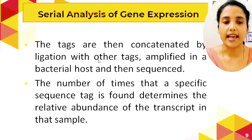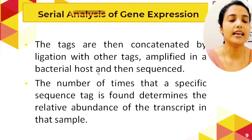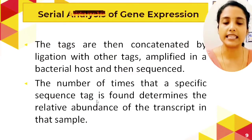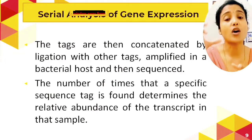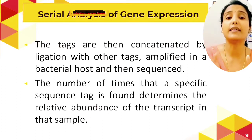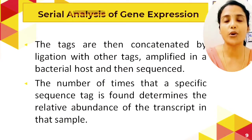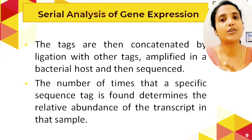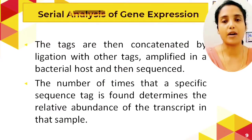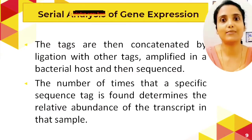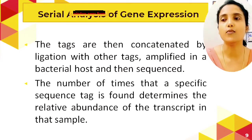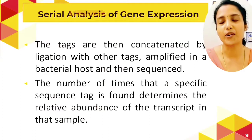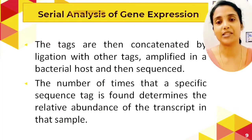The tags are then concatenated by ligation with other tags, amplified in a bacterial host, and sequenced. The number of times a specific sequence tag is found determines the relative abundance of the transcript in that sample. From one mRNA you get one cDNA and from that one tag. If a gene has been expressed multiple times, you will get multiple mRNAs from the same gene, giving the same tag. So the number of tags indicates how actively that gene has been expressed.